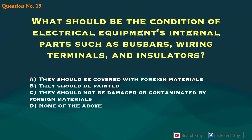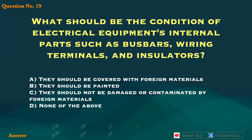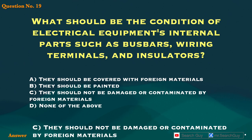Question 19. What should be the condition of electrical equipment's internal parts, such as bus bars, wiring terminals, and insulators? A. They should be covered with foreign materials. B. They should be painted. C. They should not be damaged or contaminated by foreign materials. D. None of the above. Answer: C. They should not be damaged or contaminated by foreign materials.